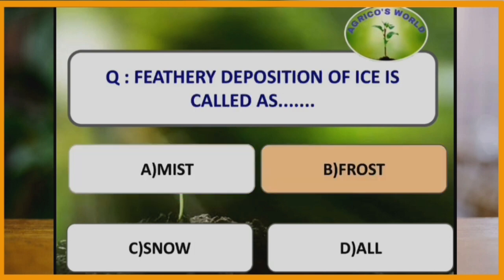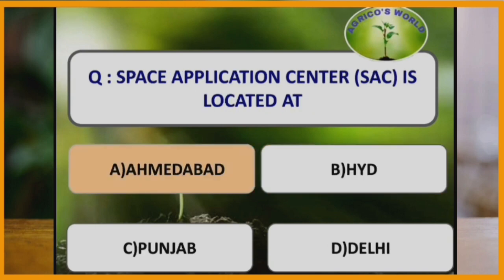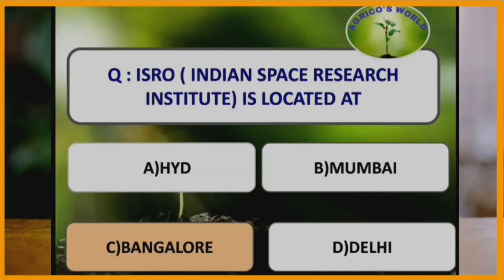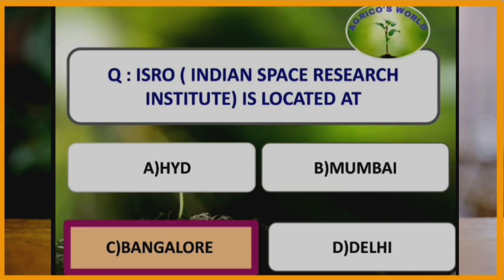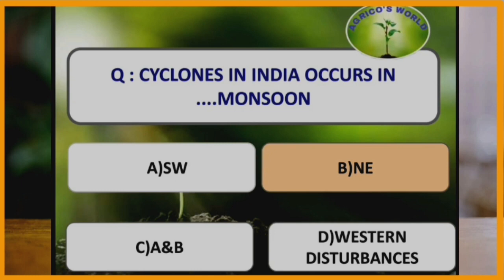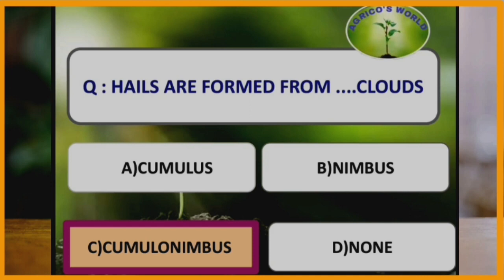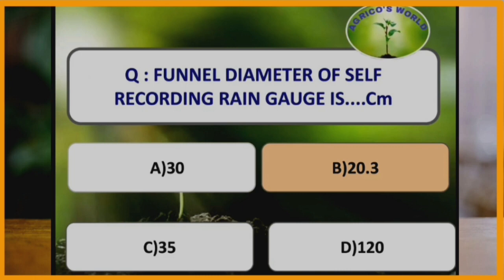Feathery deposition of ice is called frost. Space Application Centre is located at Ahmedabad. ISRO, the Indian Space Research Organisation, is located at Bangalore. Cyclones in India occur mostly during the northeast monsoon period. Hail is formed from cumulonimbus clouds. The funnel diameter of a self-recording rain gauge is 20.3 cm.